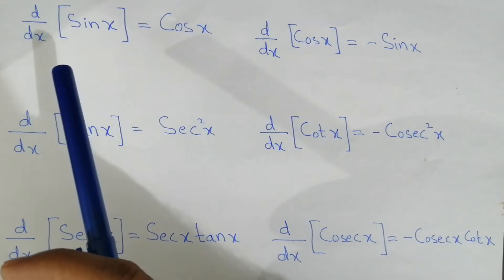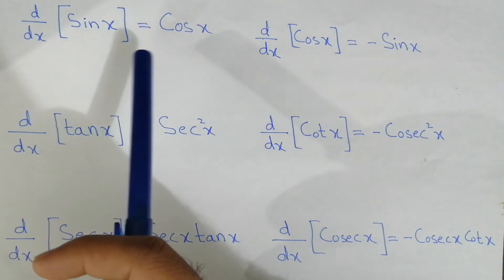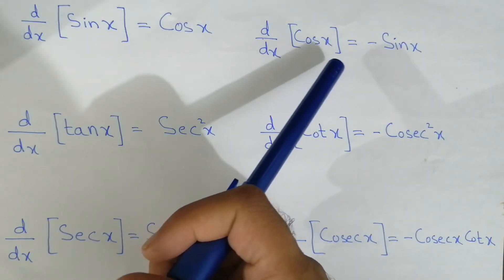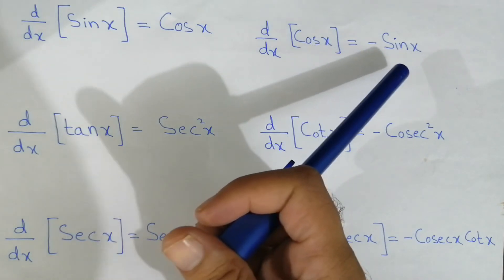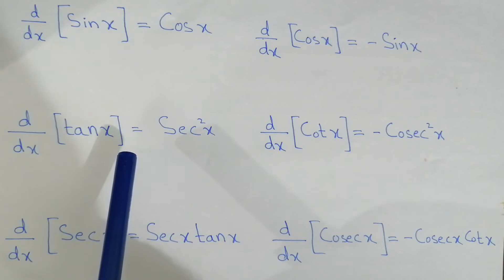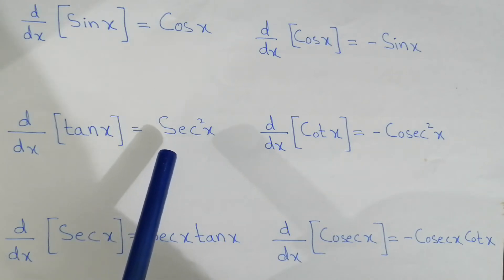Now here we have the derivative of sine x is equal to cosine x. The derivative of cosine x is equal to negative sine x. And the derivative of tangent x is equal to secant squared x.